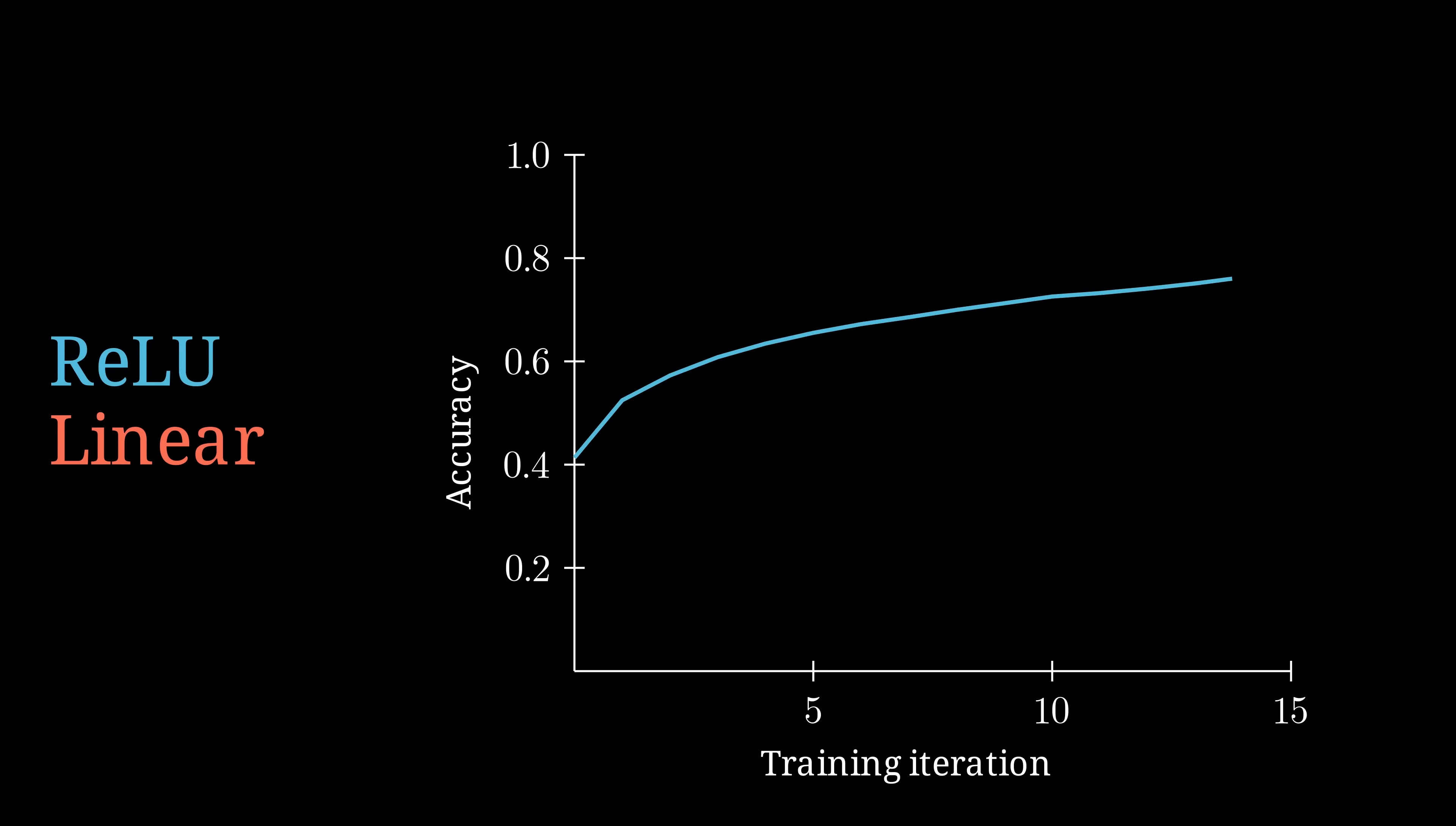we can see that, instantly, the model is not able to learn anymore when using a linear function as activation function.